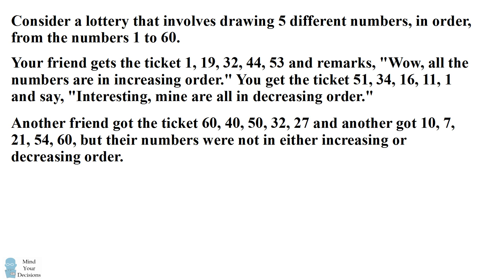Another friend got the ticket 60, 40, 50, 32, 27. And another got 10, 7, 21, 54, 60. But their numbers were not in either increasing or decreasing order.